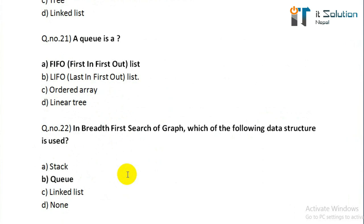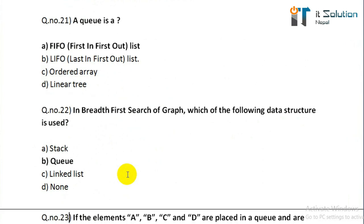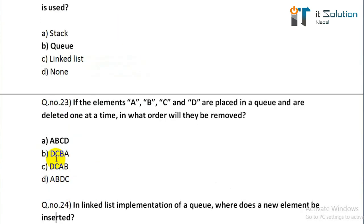Question number twenty-two: in breadth-first search of a graph, which of the following data structures is used? Its correct answer is queue, option B. Question number twenty-three: if elements A, B, C, and D are placed in a queue and are deleted one at a time, in what order will they be removed? Its correct answer is option A — A, B, C, D.